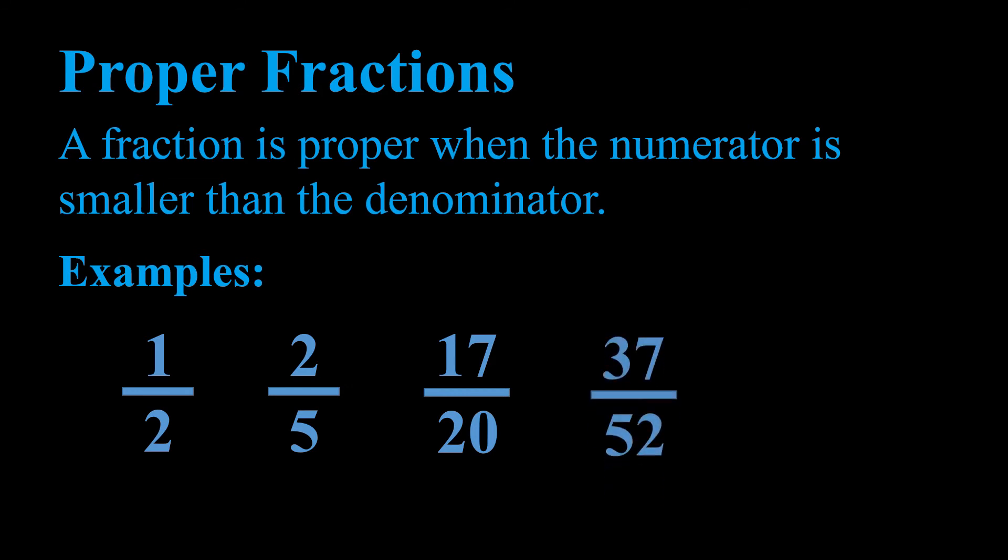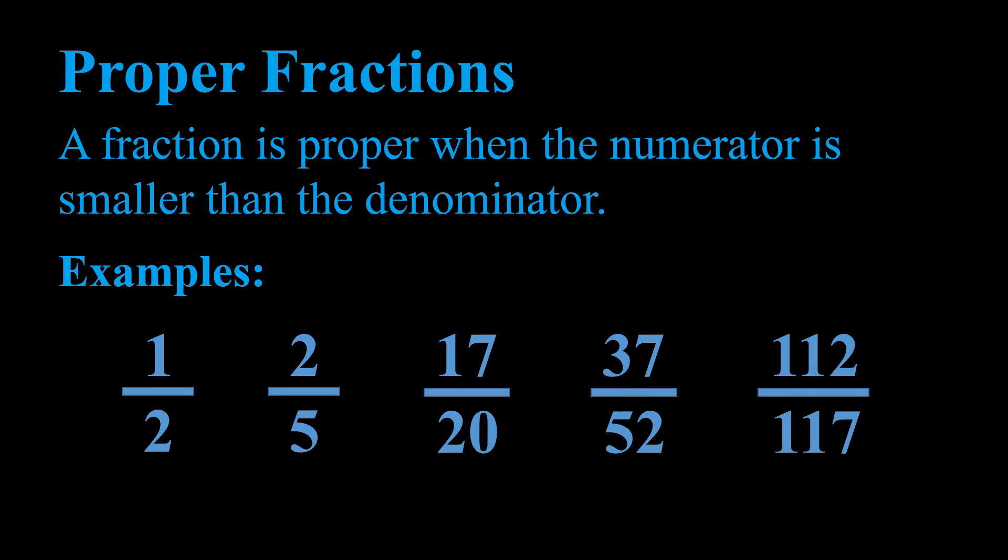Here we have 37 out of 52, or 37 divided by 52, and again the numerator is smaller than the denominator. Our final example is 112 out of 117, which also meets the criteria of being a proper fraction because the numerator is smaller than the denominator.